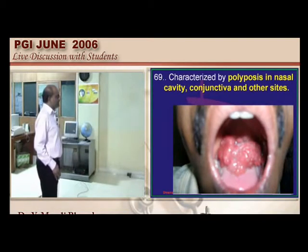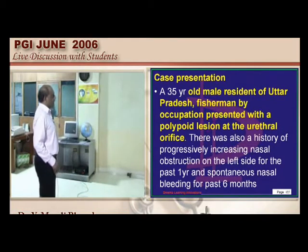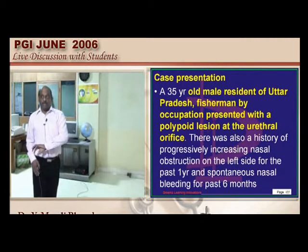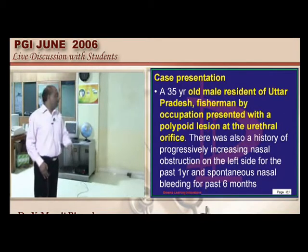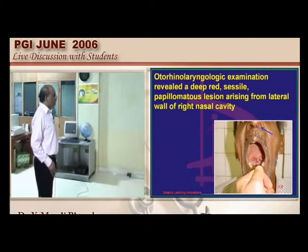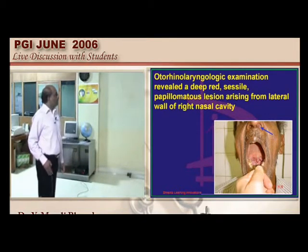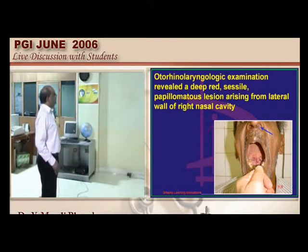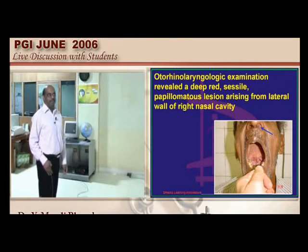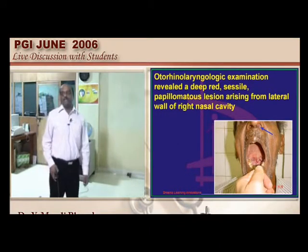Case presentation: A 35-year-old fisherman from Uttar Pradesh presents with a polypoidal urethral lesion and a polypoidal lesion causing nasal obstruction. On examination, a polypoidal lesion is visible on the lateral wall of the right nasal cavity — a classical example of Rhinosporidium seeberi. The lesion shows multiple spores. Dapsone is commonly used in management, along with electrocautery and radical surgery for polypoidal lesions.